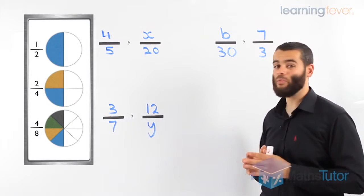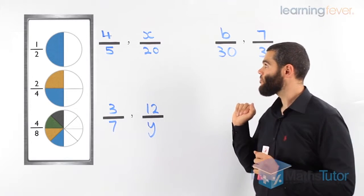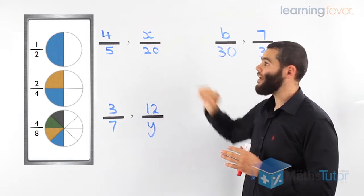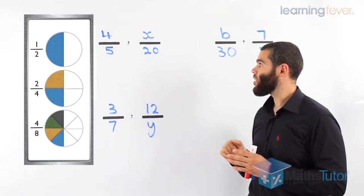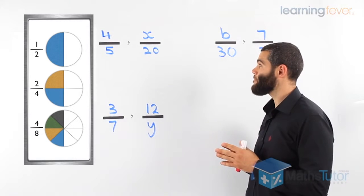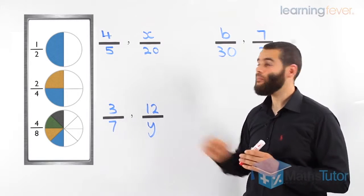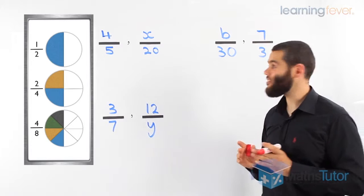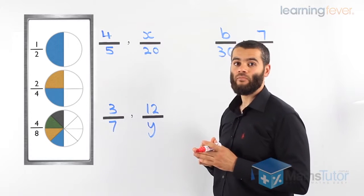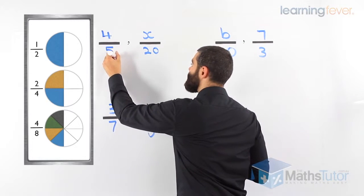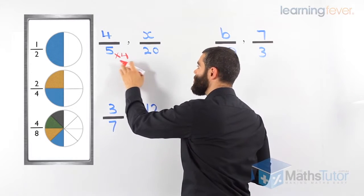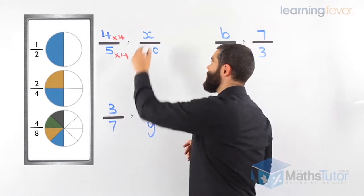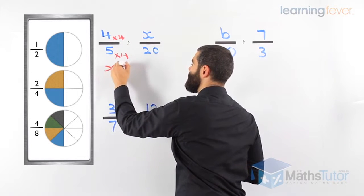Now let us look at these three examples. We would like to know what is the equivalent fraction from four over five to x over 20 — so we would like to know the value of x. We know these are equivalent. The question says: find the equivalent fractions, find x. Four over five and something over 20 makes these two fractions equivalent. We ask ourselves: how do we get from five to 20? Five times four equals 20. Whatever we do to the bottom, we must do to the top. Four times four is 16, so the value of x is 16.